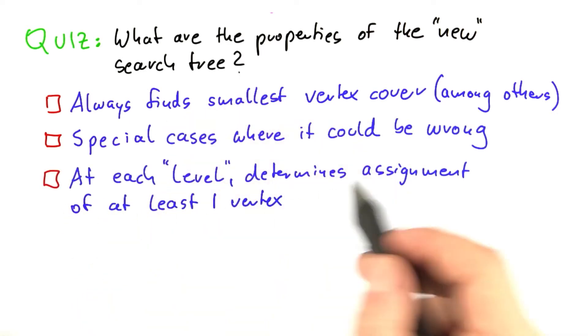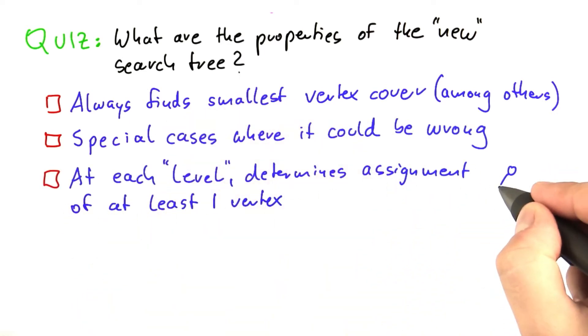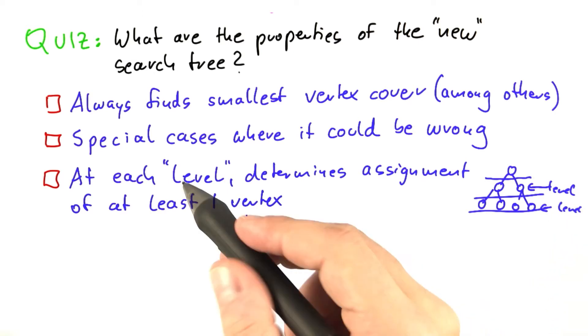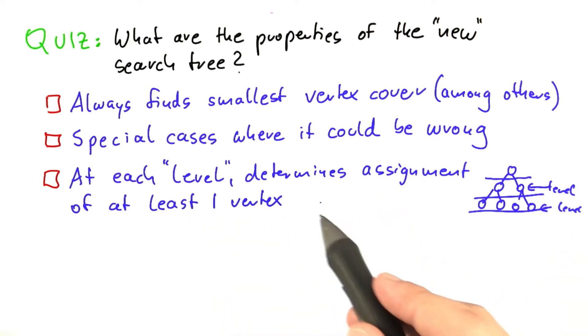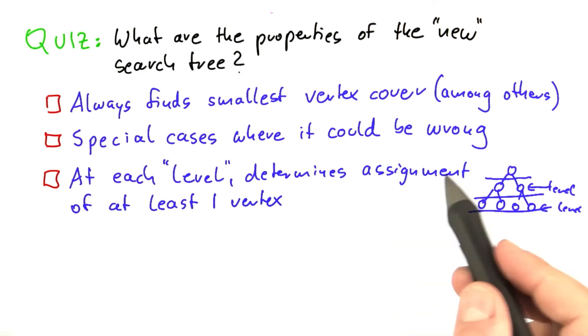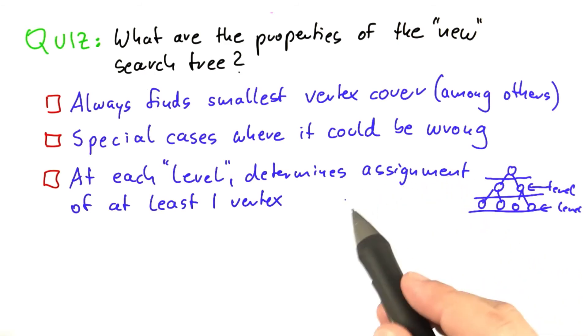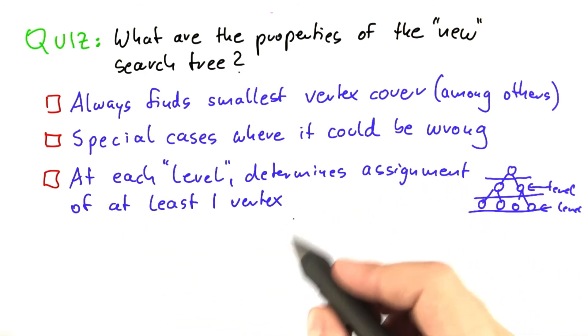Is it that the search tree at each level—and by level I basically mean if this is the tree here, then this would be a level, and this would be the next level—is it that at each level the algorithm determines the assignment, so whether a vertex is in the vertex cover or not, for at least one vertex?